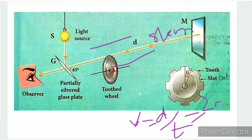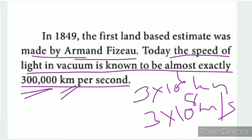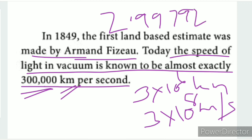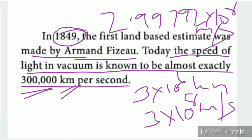The speed formula is: speed equals 2D divided by T. From this calculation, we find out exactly 2.99792 × 10^8 meters per second. It took scientists approximately 200 years to determine this value accurately.